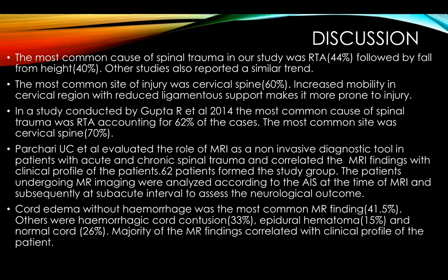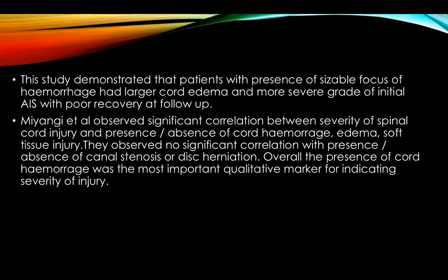In the study by Gupta et al., the most common cause of spinal trauma was RTA and the most common site was the cervical spine. Prachari conducted a study on 62 patients analyzed according to the AIS, demonstrating that a sizable focus of hemorrhage with larger cord edema correlated with more severe initial AIS grade and poor recovery at follow-up. A study by Miangi showed a significant correlation between the severity of spinal cord injury and the presence or absence of cord hemorrhage, edema, and soft tissue injuries.